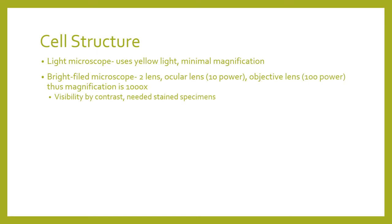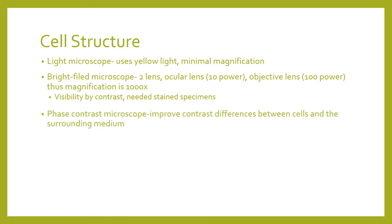Next is your bright field microscope. It has two lenses: the ocular lens magnifies 10 times, and your objective lens can either magnify 100 times — your low power field — or 1000 times — your high power field. Visibility is by contrast, and most specimens should be stained.